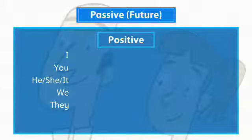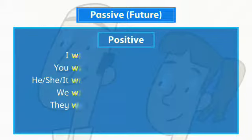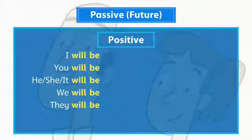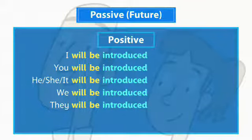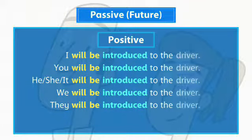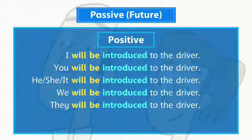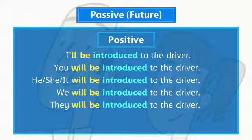We form the future passive positive with 'will be' and the past participle of the main verb. This is the same for all subjects. We often use the short form in spoken conversations.